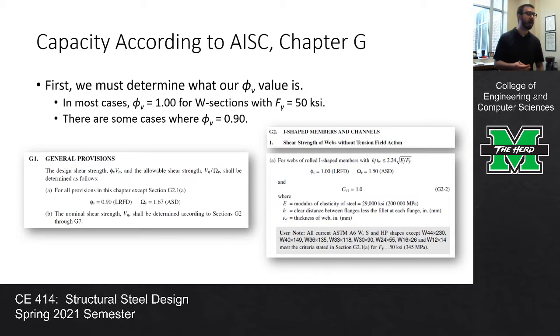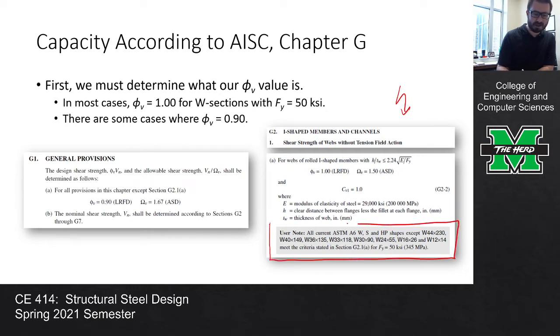For a W shape, especially a W shape of 50 KSI steel, which is of course the most common, this check is really easy. So for a W section with 50 KSI steel, the first thing we have to do is we have to determine whether or not our fee value is 1 or 0.9 and for W sections of 50 KSI, most cases it's 1. There are some instances where it's not, but there's only about eight sections. If you go to the relevant section in the spec and particularly look at this, there are some users notes here which are actually really, really valuable because they really walk you through it.